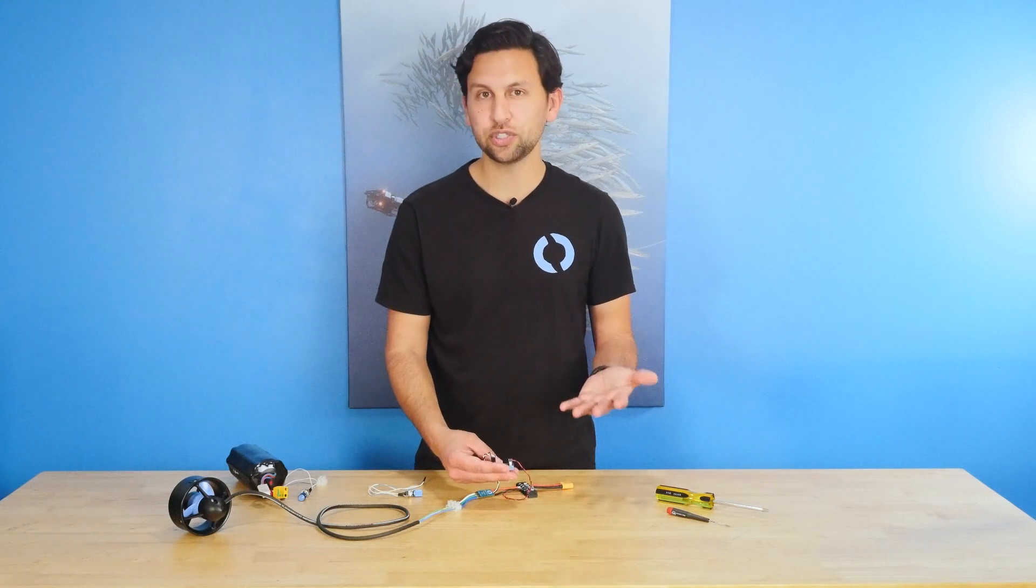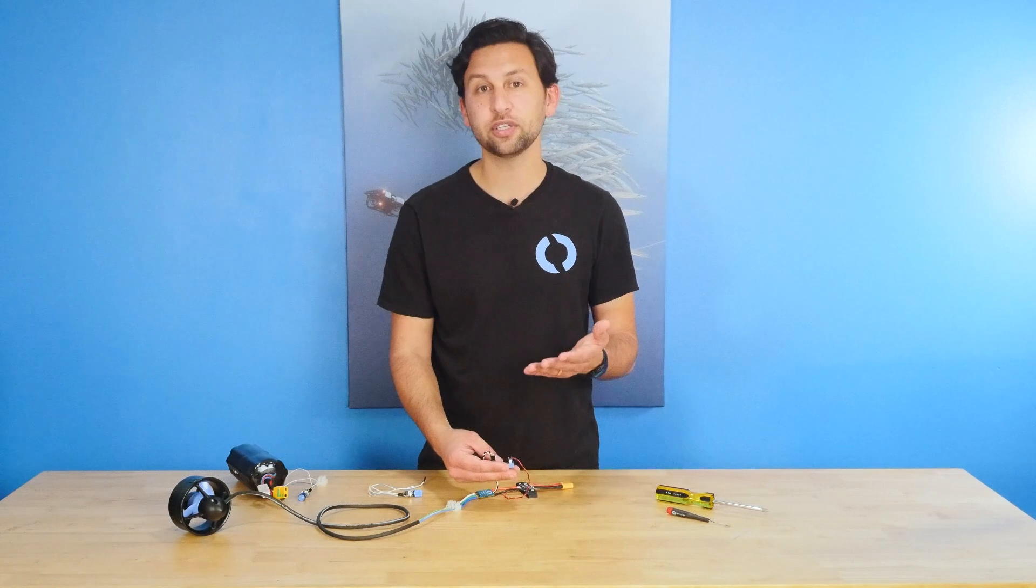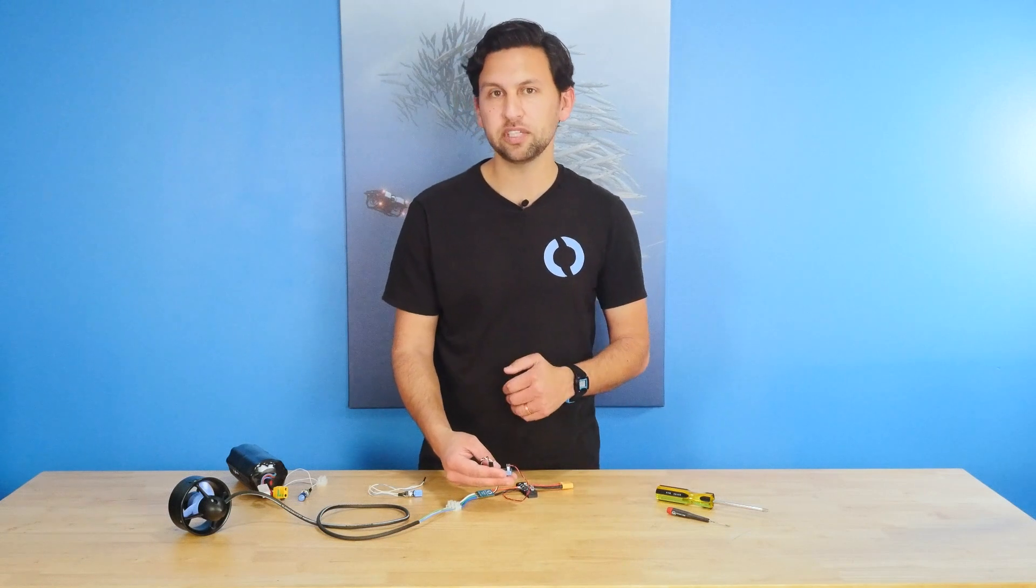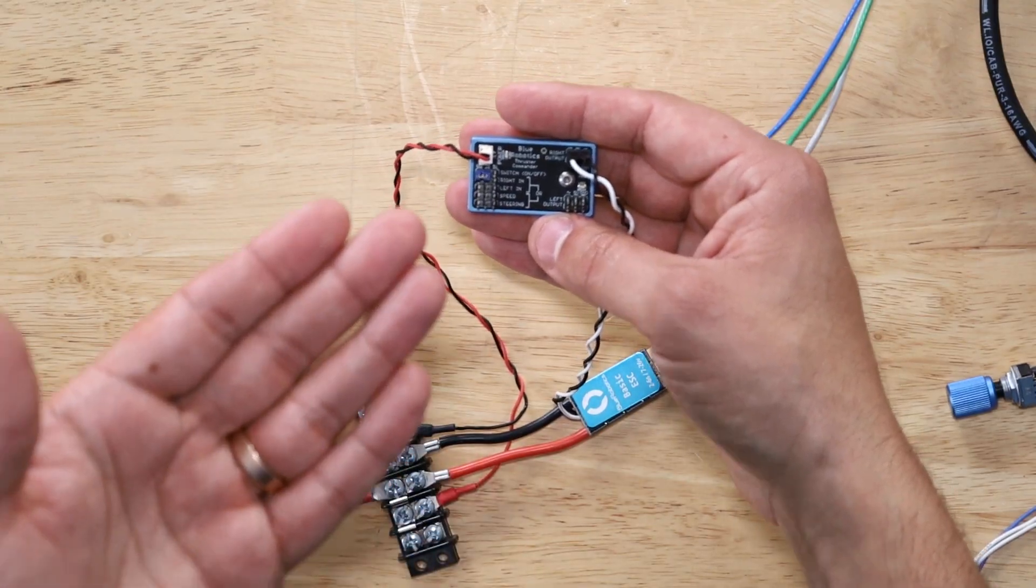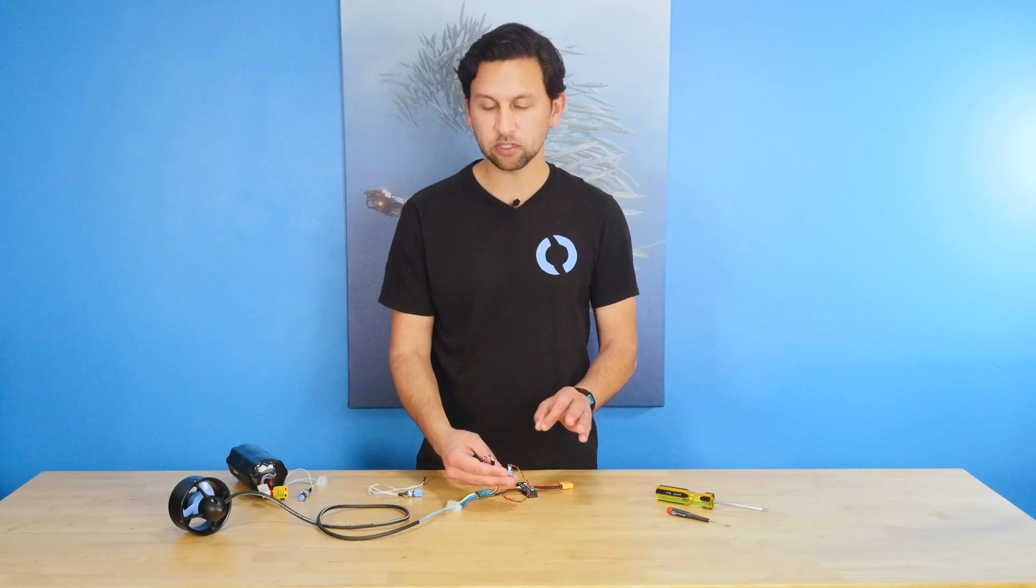And similarly, you can connect a switch to that input. We don't have one provided in the kit, but if you'd like to control the thruster just by turning it on and off to whatever speed the potentiometers are set to, then you can connect a switch up to that input. By default, that jumper will just keep it enabled all of the time.